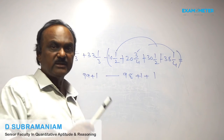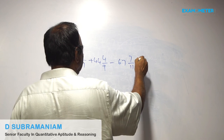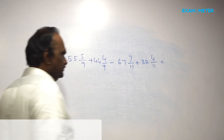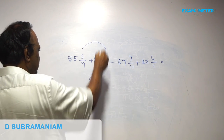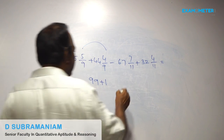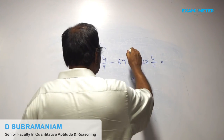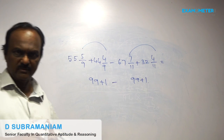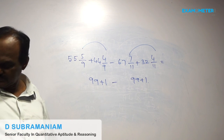When the denominators are equal, you can add or subtract the numerators. For example: 55 plus 44 is 99, and 5 by 9 plus 4 by 9 is 1, so total is 100. Similarly, 7 by 11 plus 4 by 11 is 11 by 11, which equals 1; and 67 plus 32 is 99, so the total is 100.